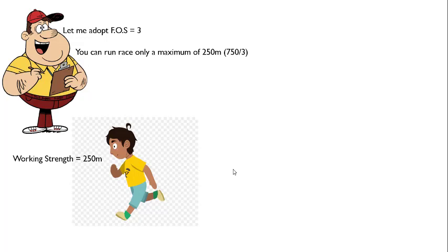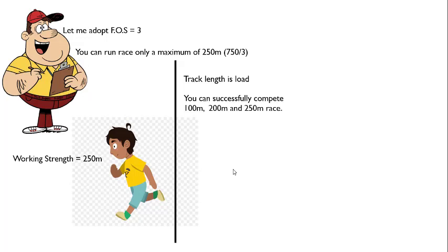Now let us say you want to participate in a race. You can have different track lengths — consider the track length as the load. It can be 100 meters, 200 meters, 250 meters, 300 meters, 400 meters, and so on. You can successfully compete for 100, 200, and 250 meters because your working strength is 250 meters. But if the track length is 400 meters, people will say you will not be able to compete since your working strength is only 250 meters.